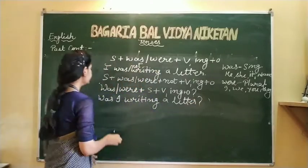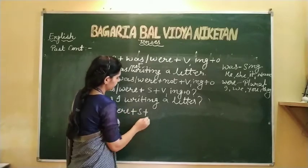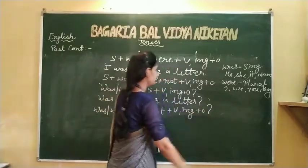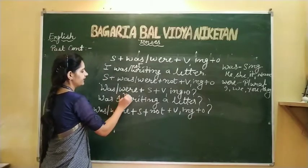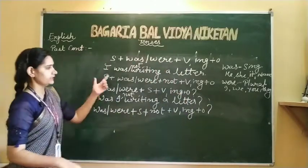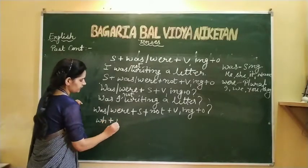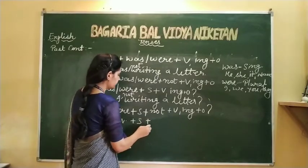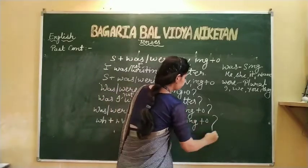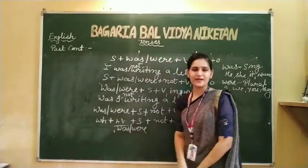Interrogative negative: was/were plus subject plus not plus verb's first form with -ing plus object। जैसे: Was I not writing a letter? — क्या मैं एक खत नहीं लिख रहा था? WH sentences में: WH word, फिर helping verb, फिर subject, फिर negative में not, फिर verb की first form में -ing, फिर object। Helping verb की जगह was/were आता है। बाकी हम बात करेंगे अपने next video में। Thank you so much.